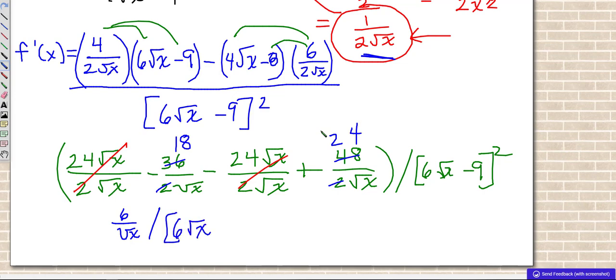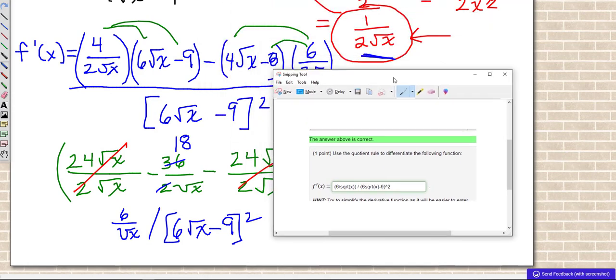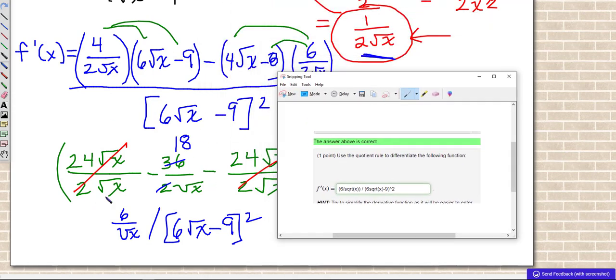Now in WebWork, how I put this in there so you can actually see it, is notice I put the numerator in parentheses, so 6 square roots of x. And then I put the denominator in parentheses because the whole quantity is squared, 6 square root of x minus 9. And that's the correct answer. Because it says right there, it's correct. Good job, Cindy.